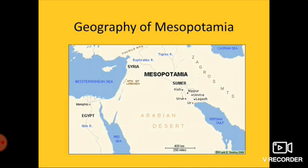A variety of food grains, plus meat from animal herding, date palms grown in the desert region, and fish available in rivers were part of their staple diet.